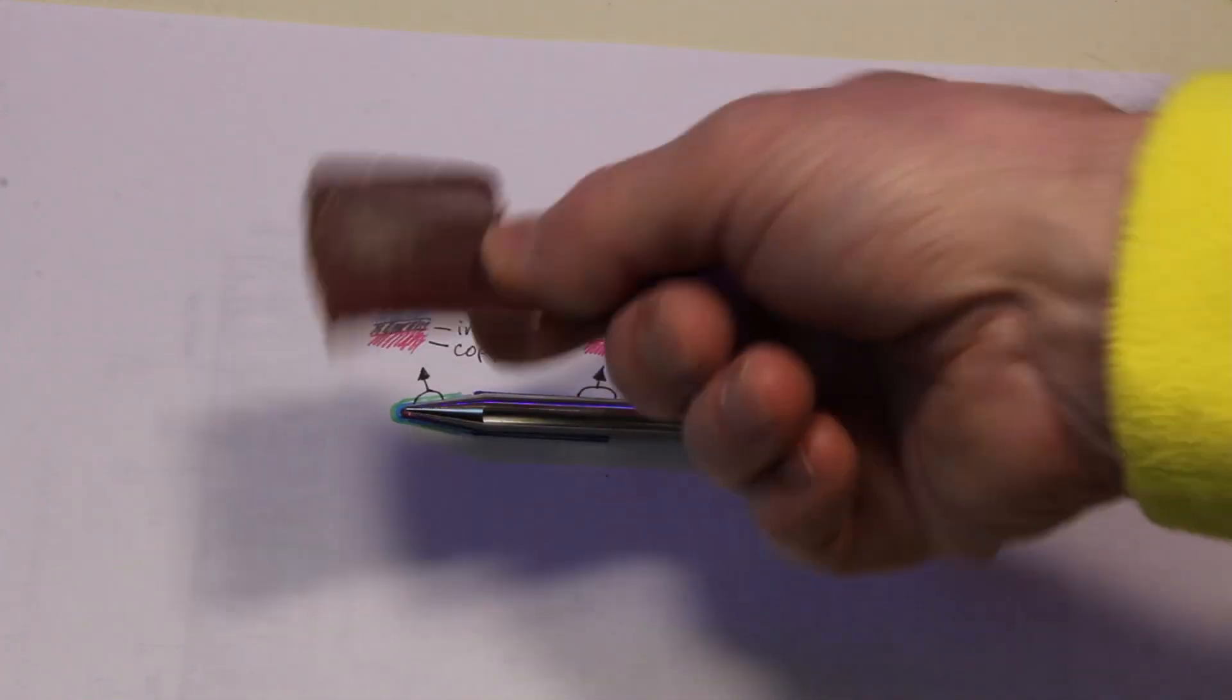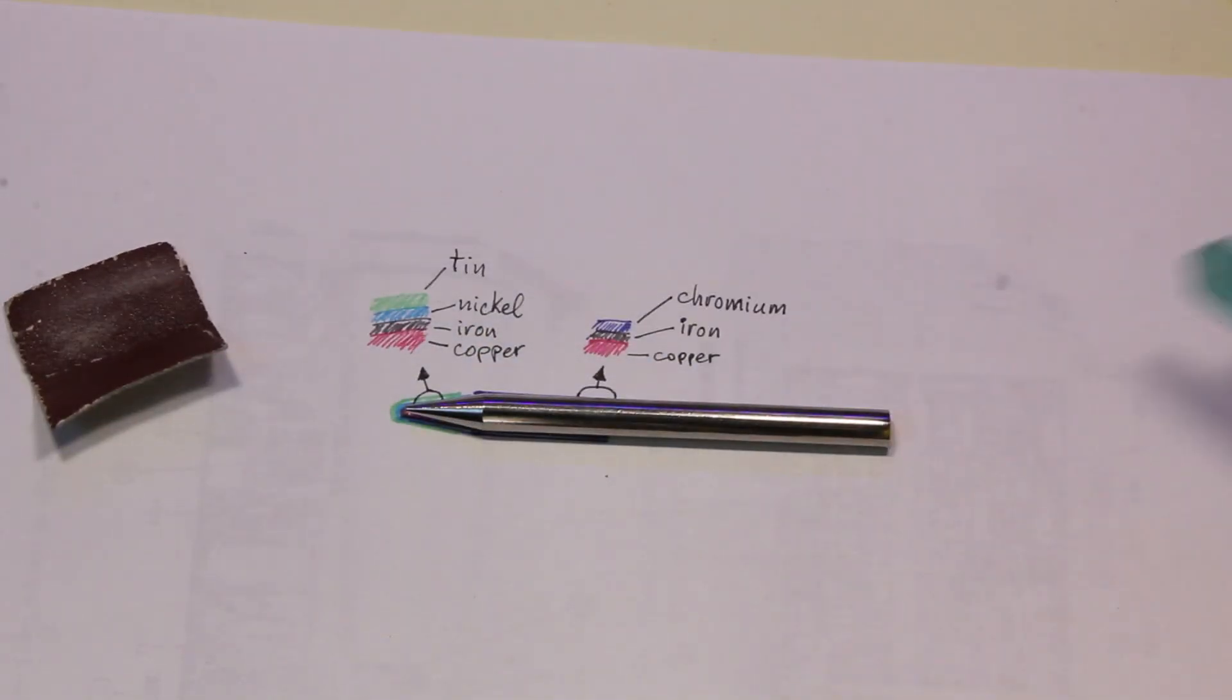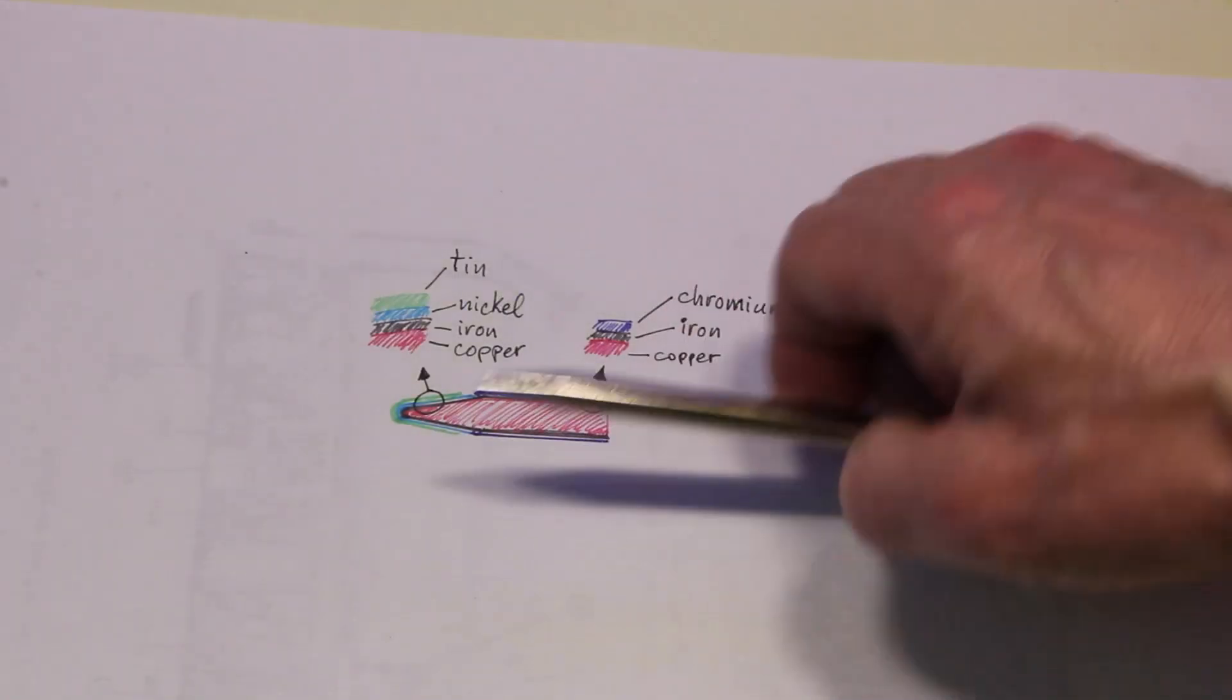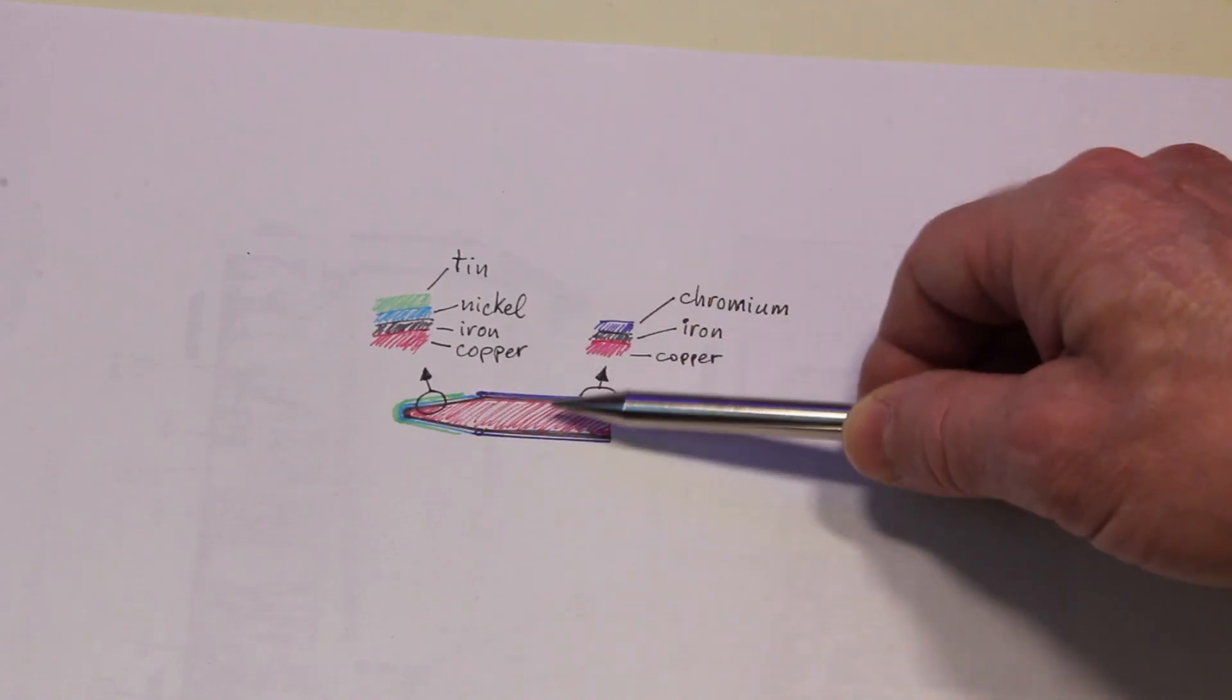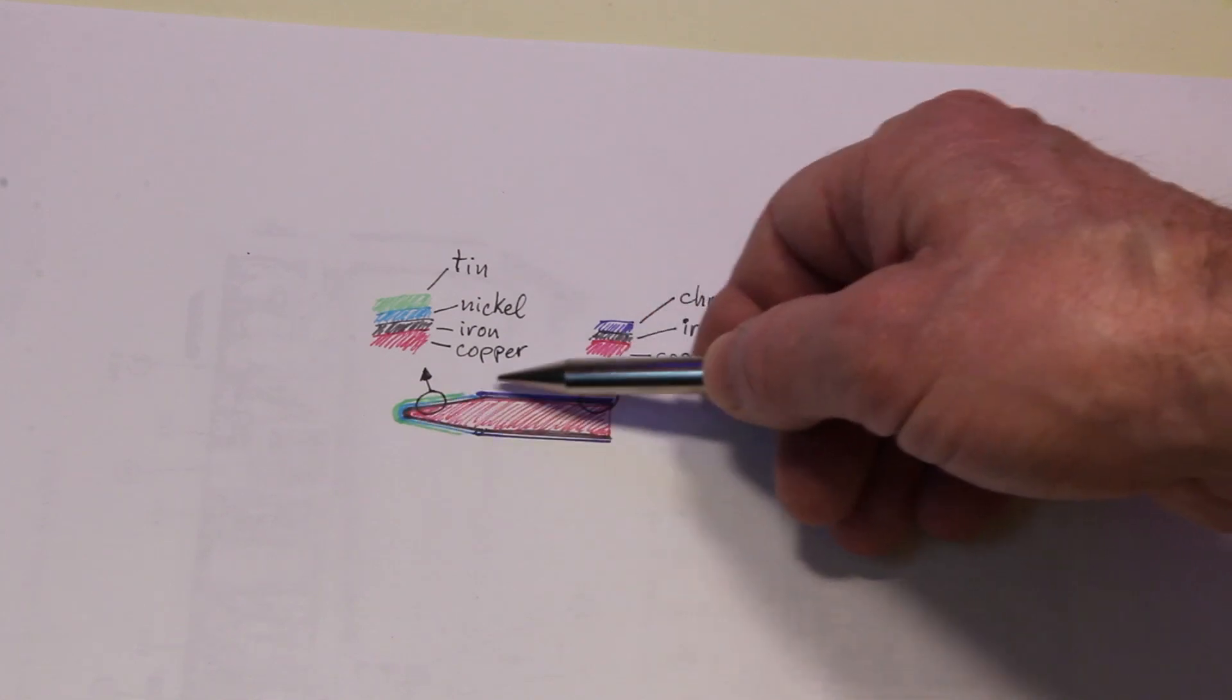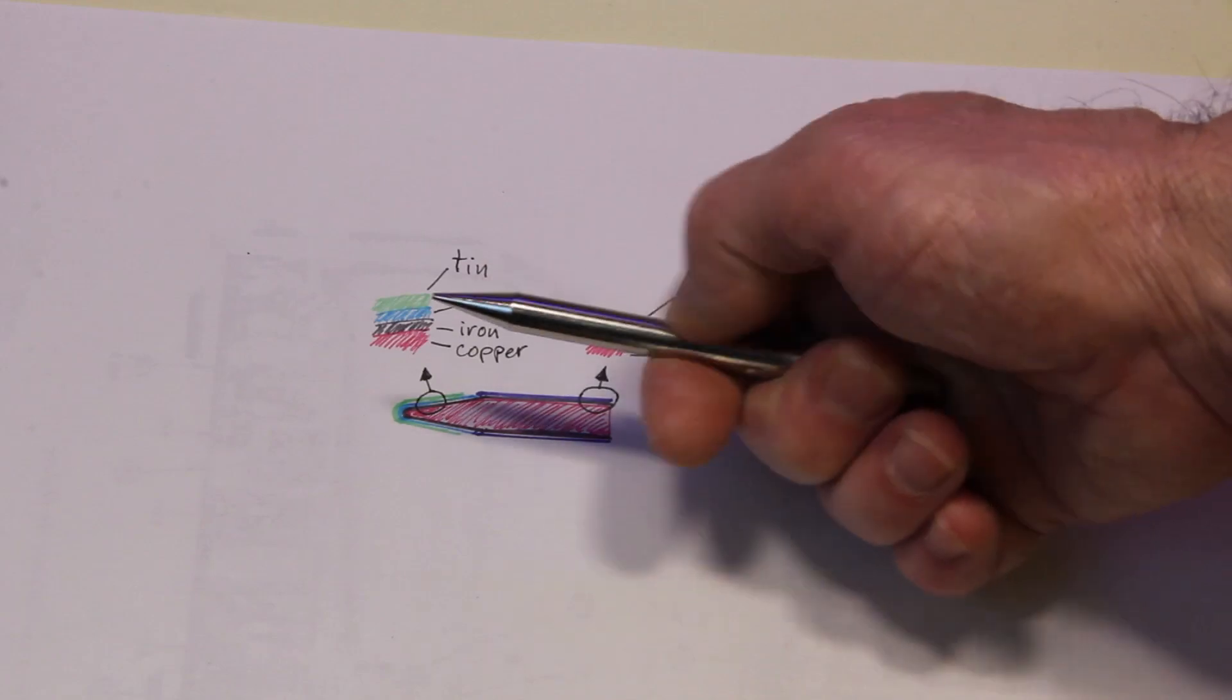To clean your tip, never use sandpaper or other scratching tools like a knife, because this would ruin the plating of the tip. In fact, tips are made with a core that is made of copper, and then they are plated with iron, and then nickel here to the very tip, and the chromium on the remainder part of the tip.